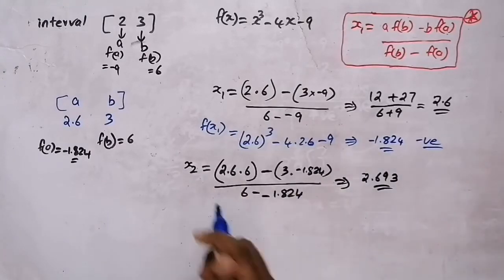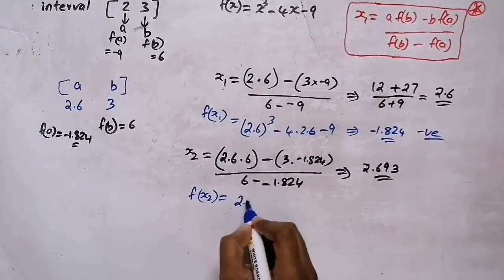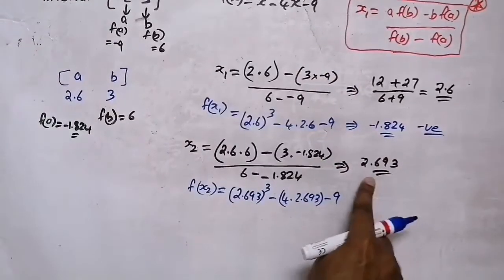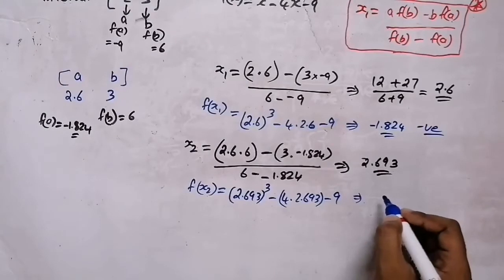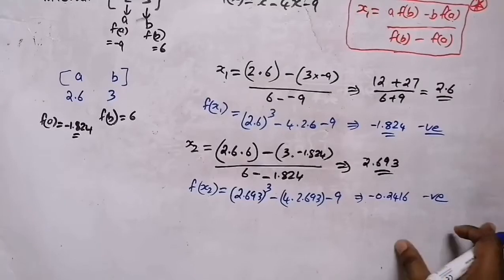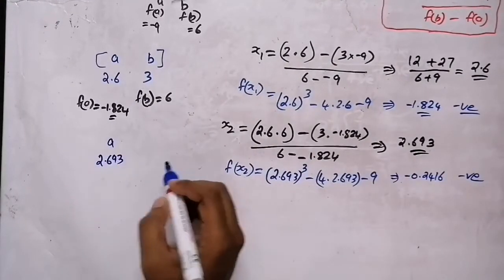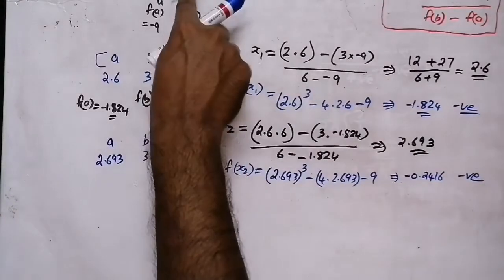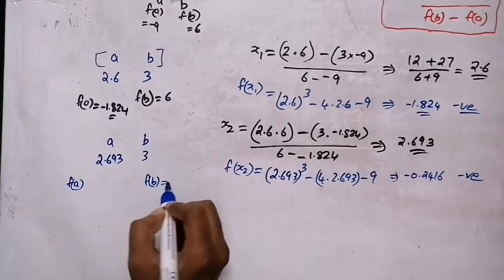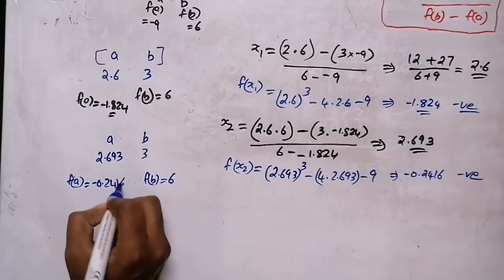Now we find f(x2) by replacing x with 2.693: 2.693³ − 4(2.693) − 9 = −0.2416, which is again a negative value. Because of that, we replace interval a with x2. So a = 2.693 and b = 3. f(b) = 6 remains unchanged, and f(a) = −0.2416.